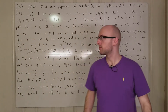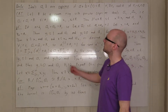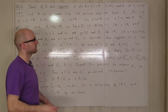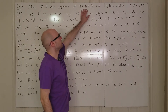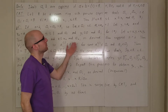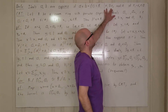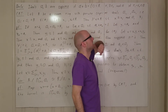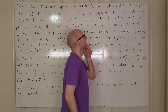Let's talk about the Chinese Remainder Theorem. First we have to define some things. If we have two ideals a and b, we say they're co-prime if when you take a plus b you get the identity, or the ideal generated by one, which is just the entire ring. We also say that two elements of a ring are equivalent mod a if their difference is contained in a.